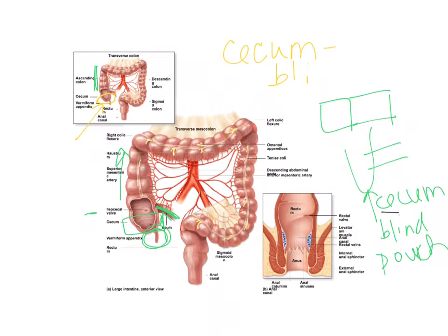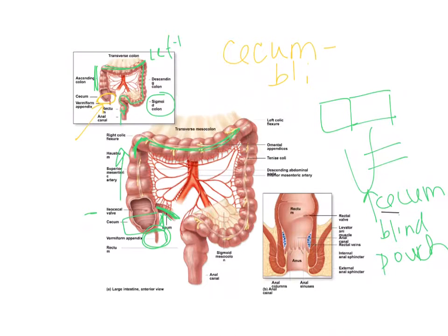Then we have the ascending colon going up, the right colic flexure as the bend, then the transverse colon, the left colic flexure, the descending colon, the sigmoid colon — shaped like an S — and then the rectum and anal canal. The pouches visible on the large intestine are called haustra; each one individually is a haustrum.